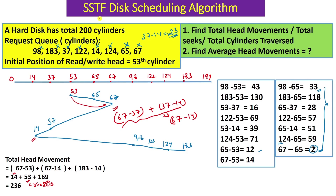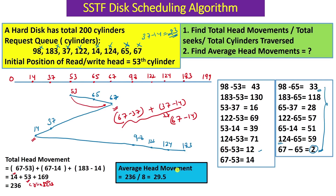Total head movements equals 236 cylinders to complete all requests according to the SSTF algorithm. The average head movement is total cylinders traversed divided by the length of the request queue. The request queue has 8 cylinders total, so 236 divided by 8 = 29.5. On average the read/write head has to move 29.5 cylinders to service any request - approximately 30 head movements.